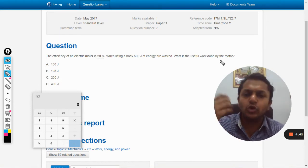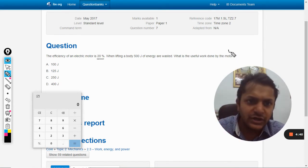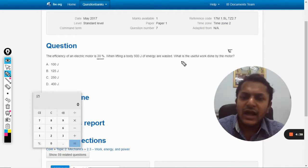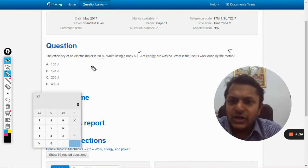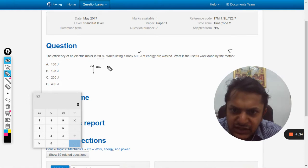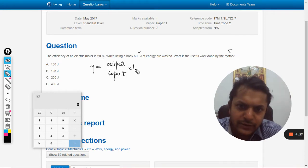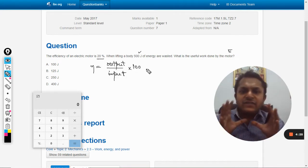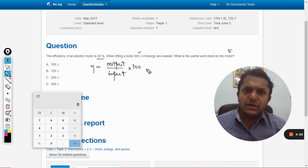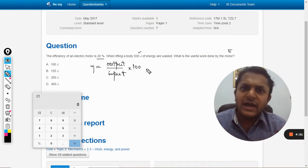The total energy given by the motor is E, and 500 joules is wasted out of it. So by efficiency, what we mean is output by input into 100. See, efficiency has many, many expressions.